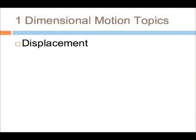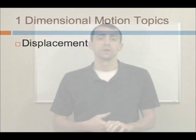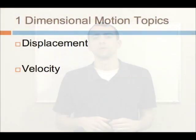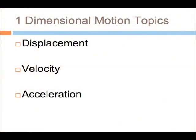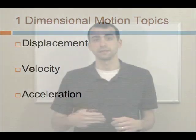There are three topics we'll talk about for one-dimensional motion. The first is displacement — we'll define it mathematically and compare it with distance traveled, because while they sound similar there is an important distinction. We'll also talk about velocity, including average velocity and instantaneous velocity, and compare velocity with speed. Finally, we'll cover acceleration, including average and instantaneous acceleration.